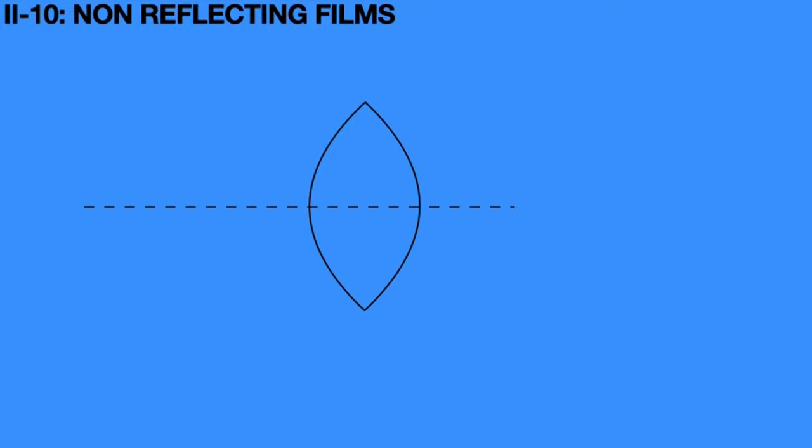Further, if you take a convex lens and coat it with magnesium fluoride material with the relevant thickness, then this material acts as a non-reflecting film. As a result, we will get 100% transmission through this convex lens.